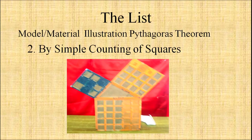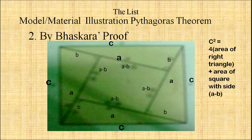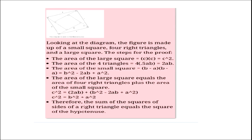Each side we construct a square and divide it into further unit squares. We can also have an illustration by Bhaskara's proof: here we have a square inside a larger square. The area of the larger square C² equals the area of four triangles plus the area of the middle square, proving that C² = B² + A².